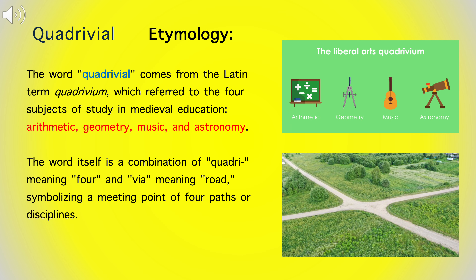The word quadrivial comes from the Latin term quadrivium, which referred to the four subjects of study in medieval education: arithmetic, geometry, music, and astronomy. The word itself is a combination of quadri, meaning four, and via, meaning road, symbolizing a meeting point of four paths or disciplines.